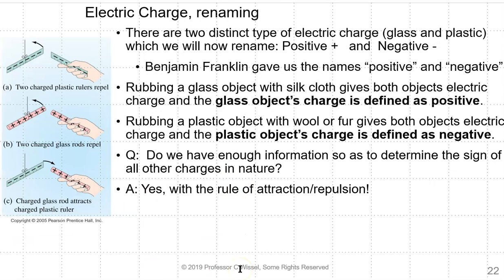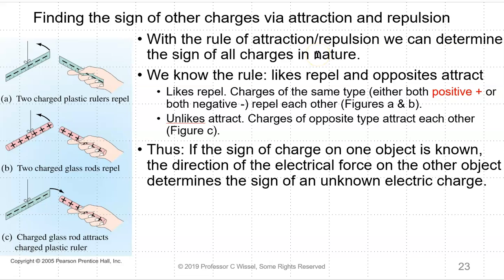We're going to rename glass and plastic. We're going to rename them positive and negative. Ben Franklin gave us these names. If you rub a glass object with silk cloth, it will give both objects electric charge and the glass object's charge is defined as positive. If you rub a plastic object with wool or fur, it gives both objects electric charge and the plastic's object charge is defined as negative. We now have enough information, being the rule of attraction repulsion, to determine the sign of everything else. With this rule, we can determine the sign of all charges in nature. We know the rule: likes repel and opposites attract.